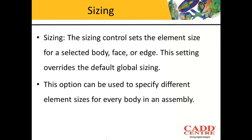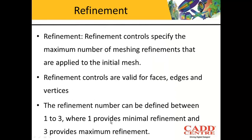We will also be discussing one more local mesh setting called refinement. The refinement control specifies the maximum number of meshing refinements that are applied to the initial mesh. Refinement controls are valid for faces, edges, and vertices. The refinement number can be defined between 1 to 3, where 1 provides the minimum refinement and 3 provides the maximum refinement.